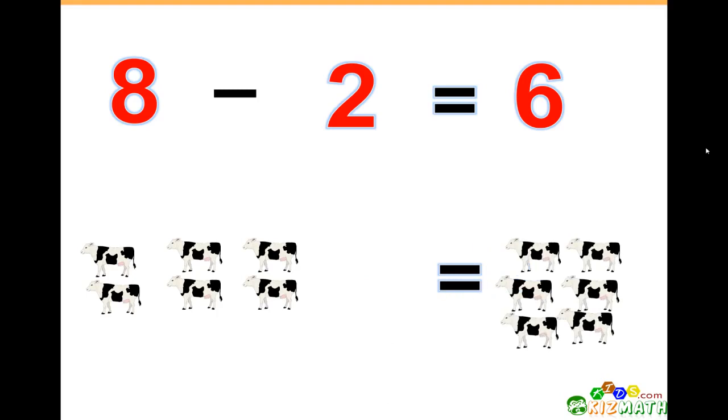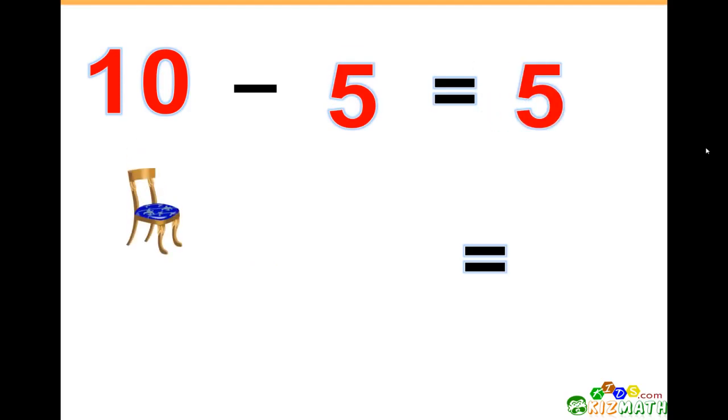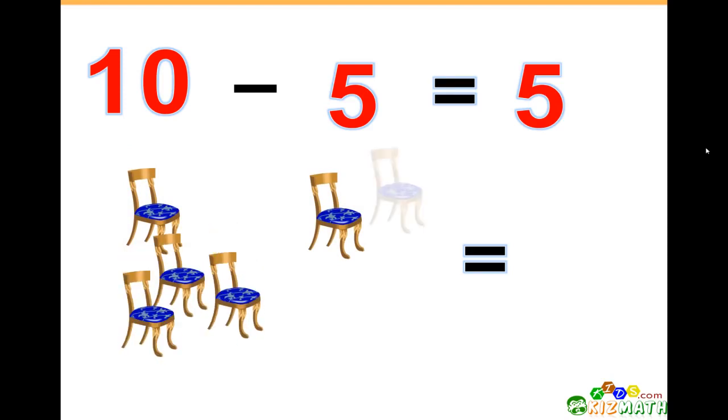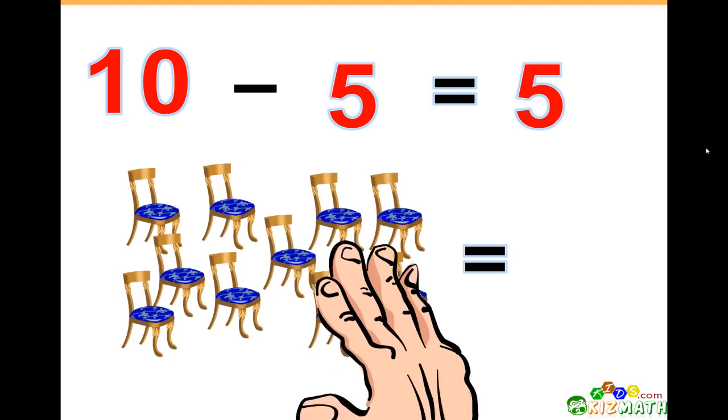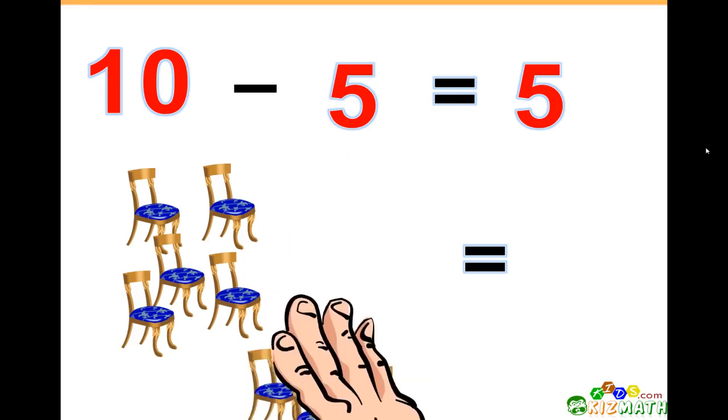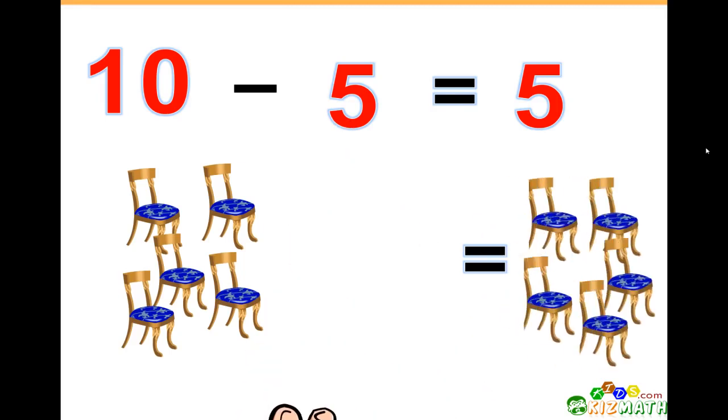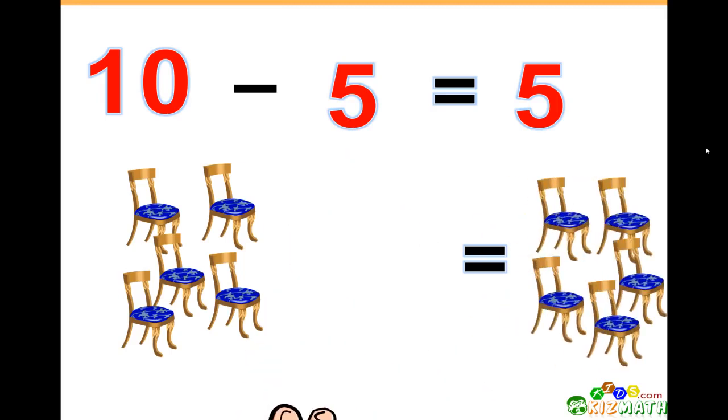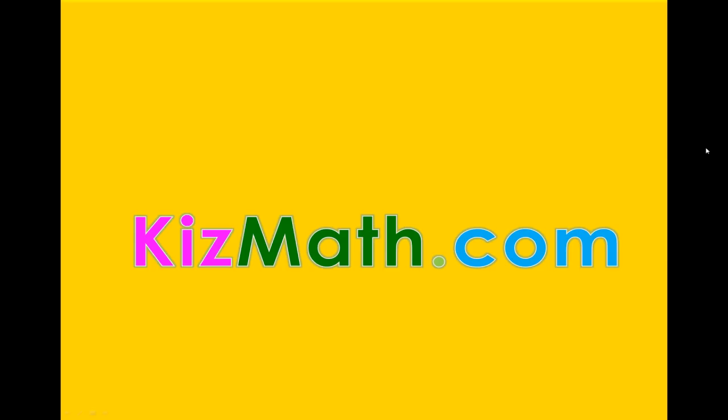10 minus 5 equals 5. We have 10 chairs, and if we take away five of those chairs, we only have five chairs left.